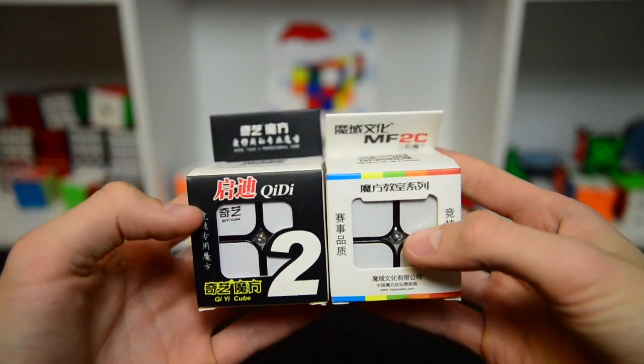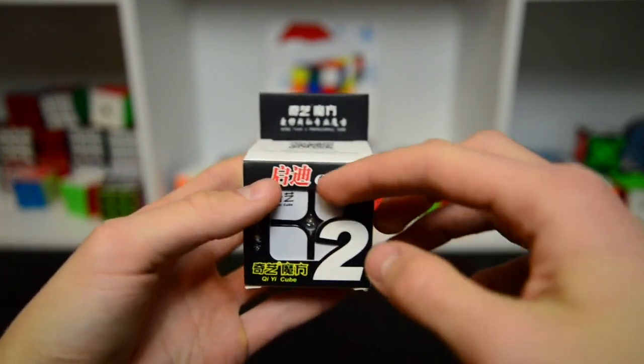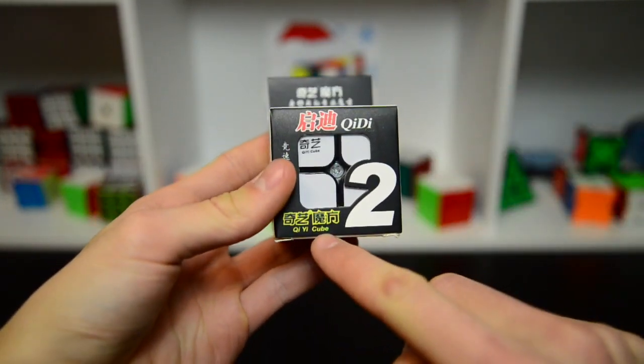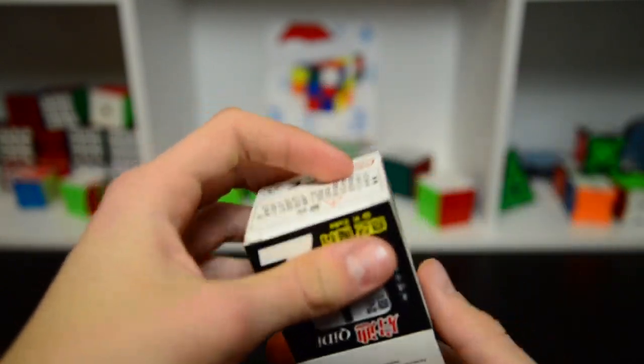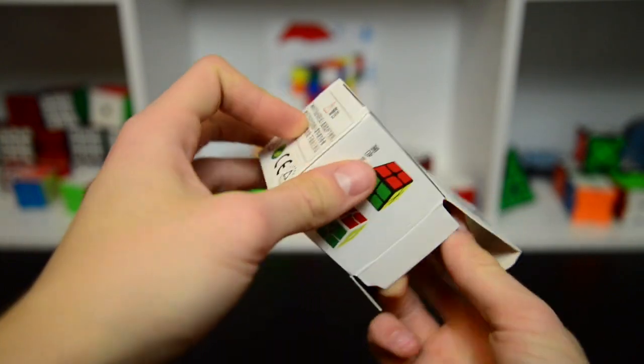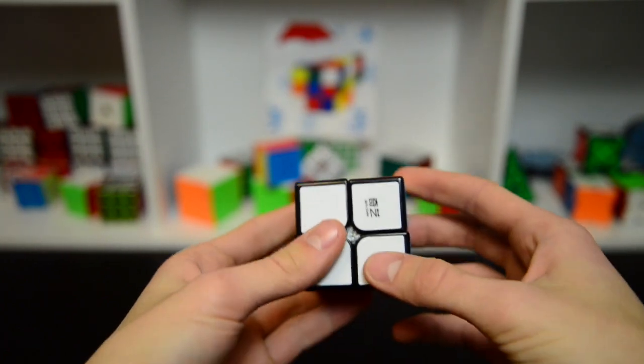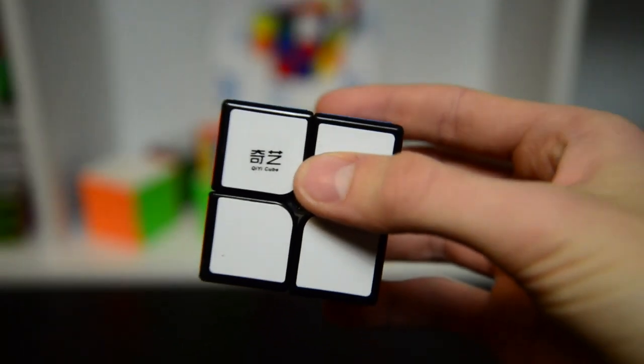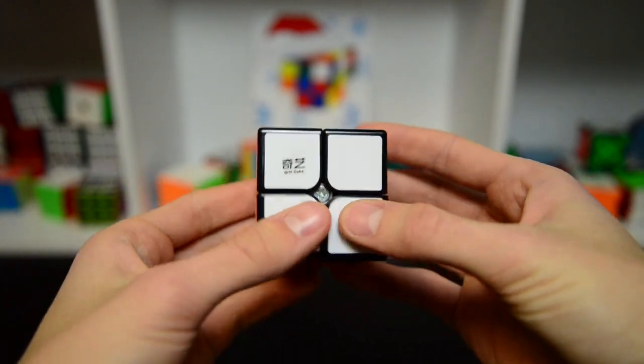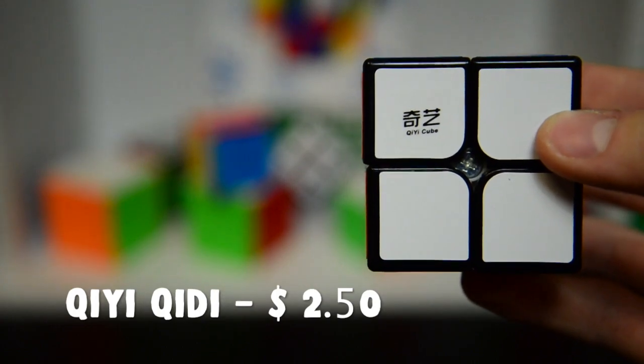Okay so let's now get into the main 2x2s. I'm going to start with the cheapest one and this is the Chidi, I think it's a Chidi 2x2 and this cube costs only like 2 dollars and 50 cents at the CubeZZ cube store and the only reason why I ordered from them is because of the free shipping and that is really really good because I live in Latvia and usually the shipping from other cube stores costs a lot. So this is the Chidi cube.